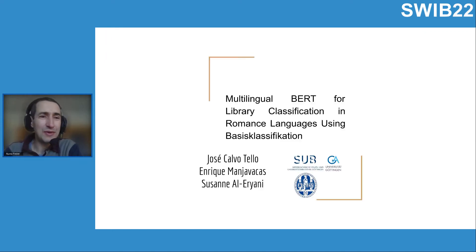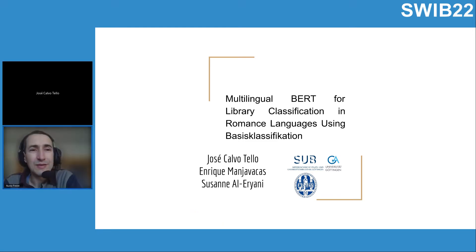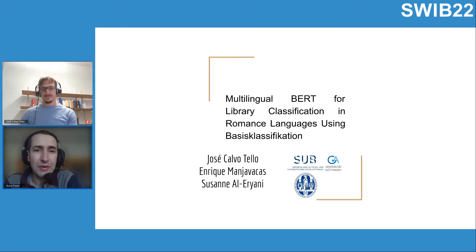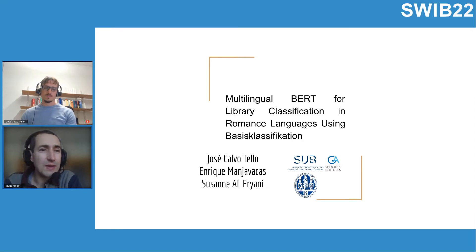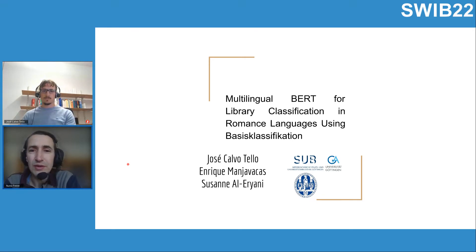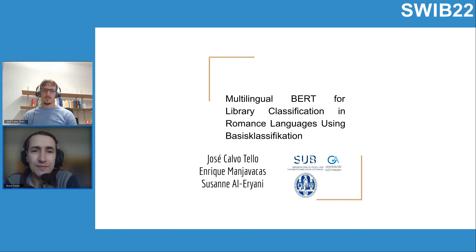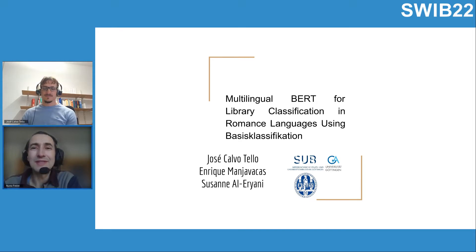We move on to our third presenter, José Calvo Delo. José works as a researcher and subject librarian at the Göttingen State and University Library, where he is responsible for digital humanities, romance studies, and history of art. His research is focused on the application and development of computational methods, such as machine learning and natural language processing applied to romance literatures and library records, which is precisely the topic of today's talk. José, please start when you are ready.